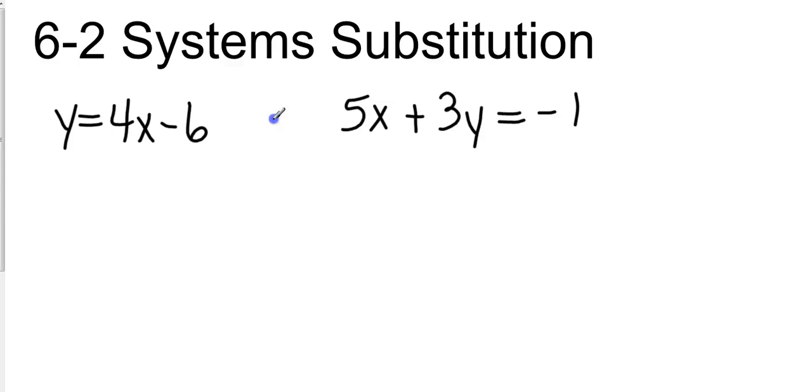So I'm going to go to my second equation and everywhere I see a y, I'm going to substitute 4x minus 6. So I'm going to have 5x plus 3 times y, so we're going to do parentheses 4x minus 6, and then put that equal to negative 1.